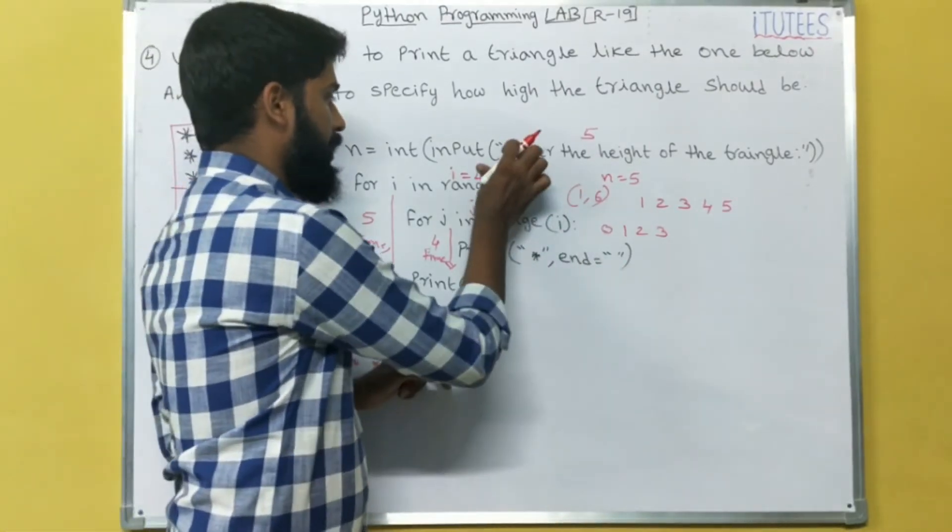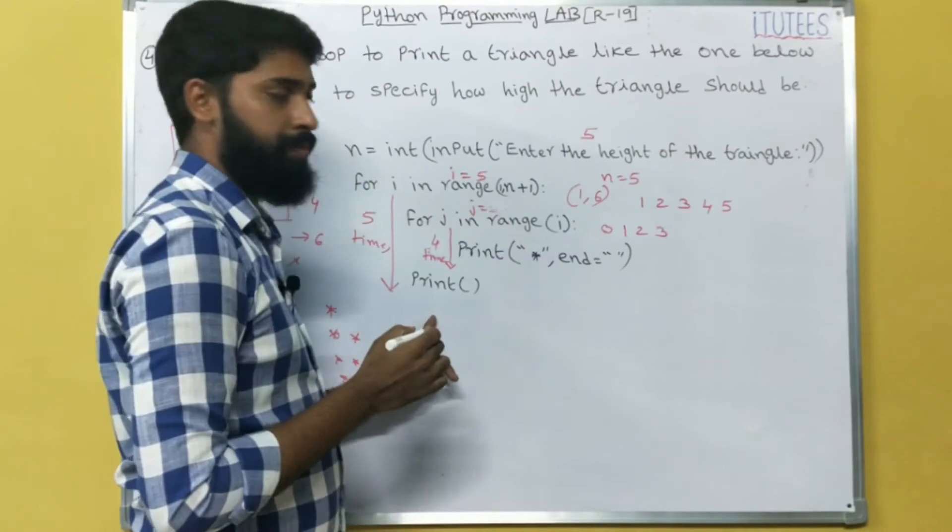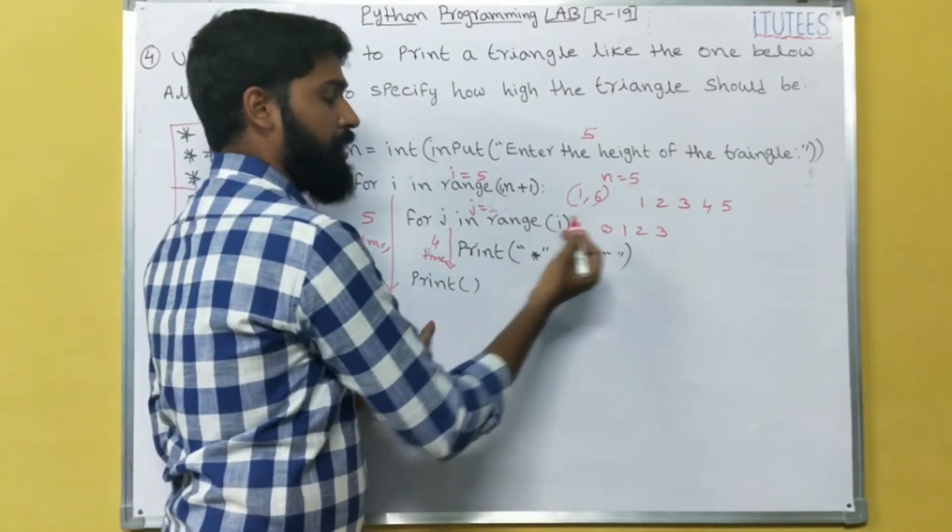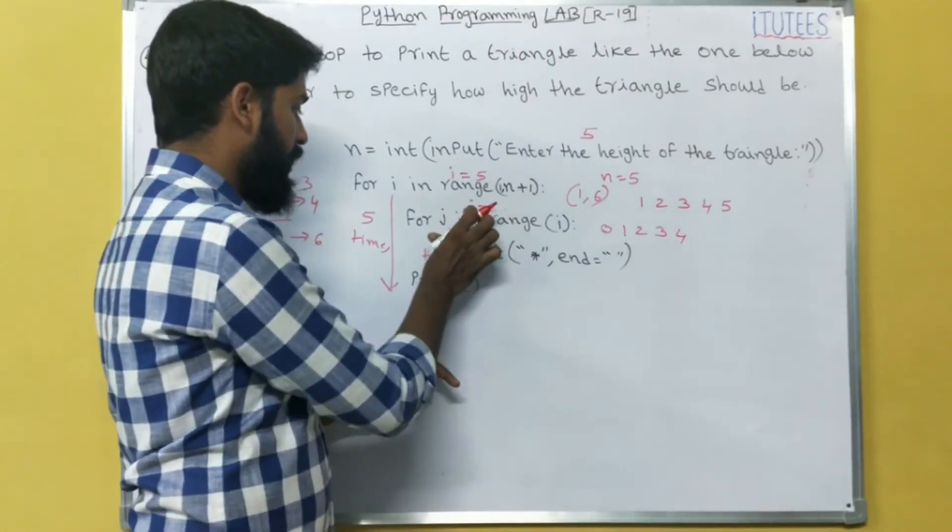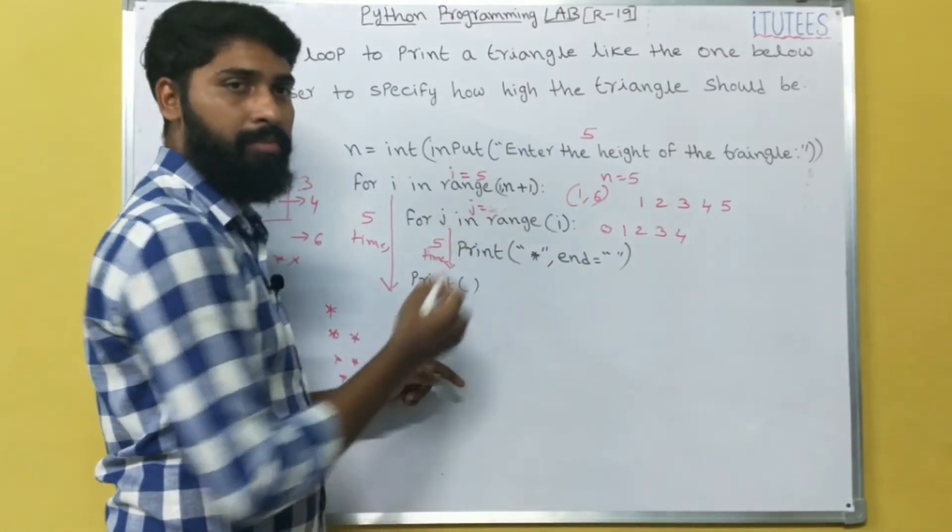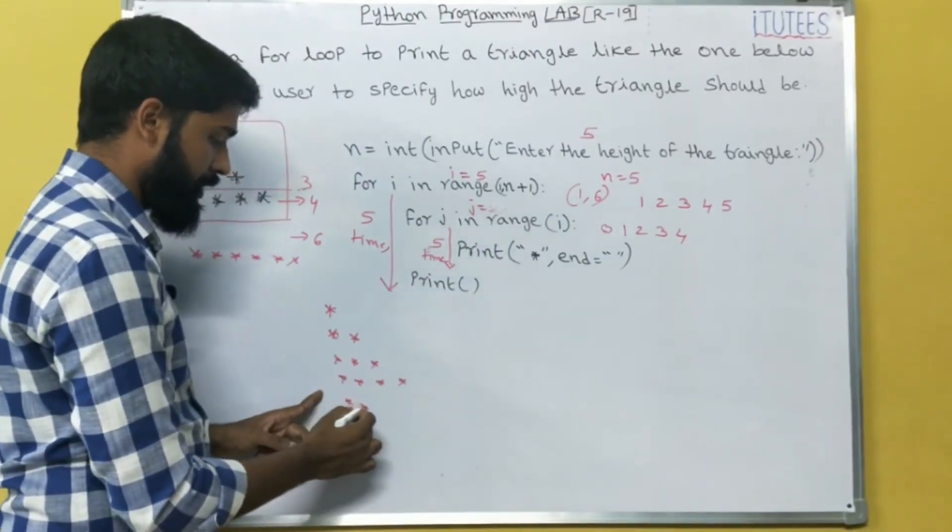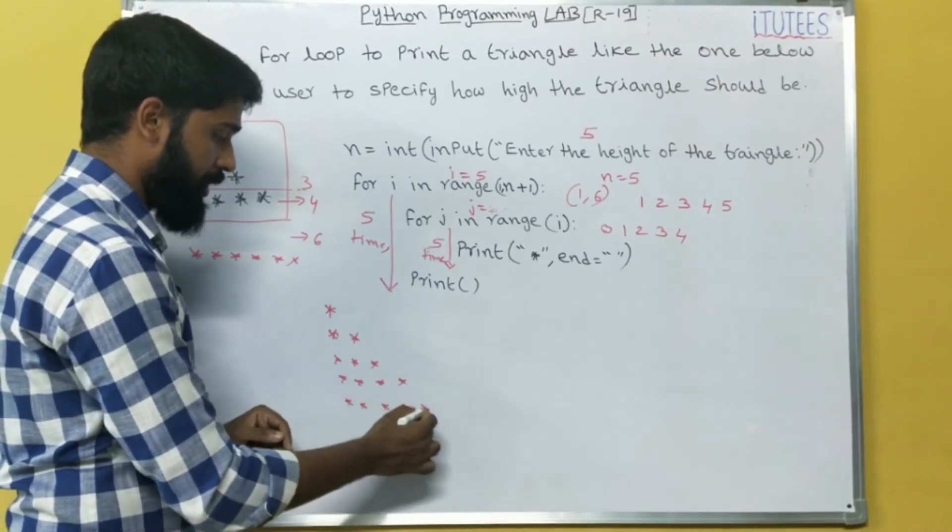Next iteration i becomes 5. So j becomes range of 5, that means 0, 1, 2, 3, 4, that means we enter 5 times. So now it prints asterisk, asterisk, asterisk, asterisk, asterisk.